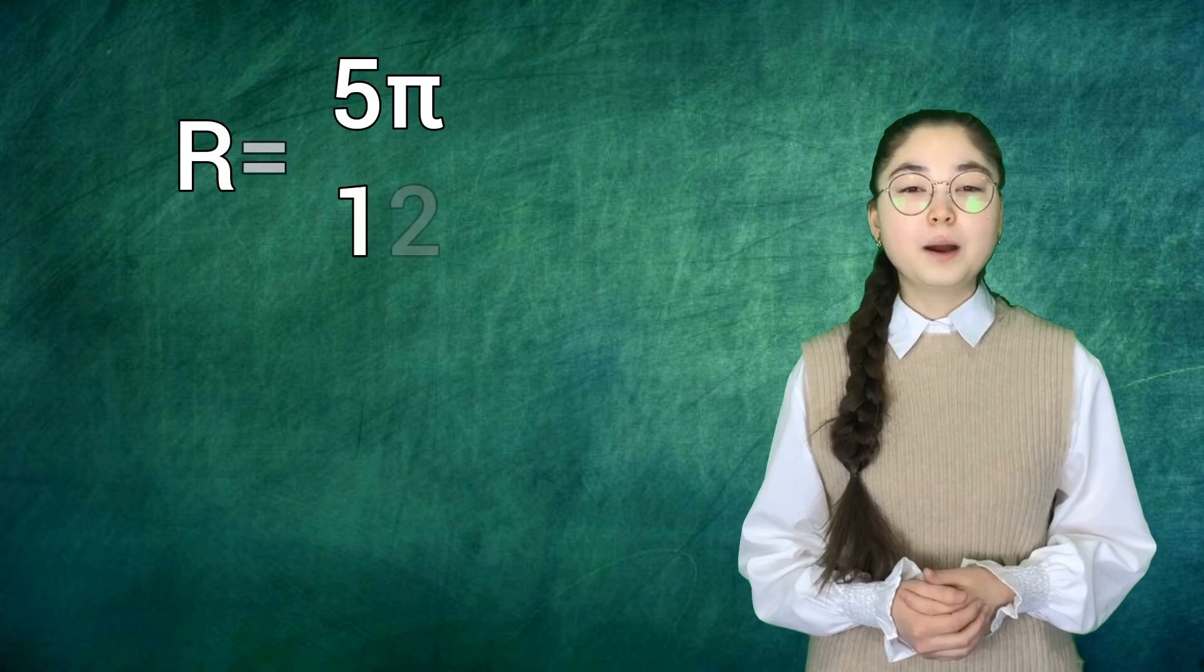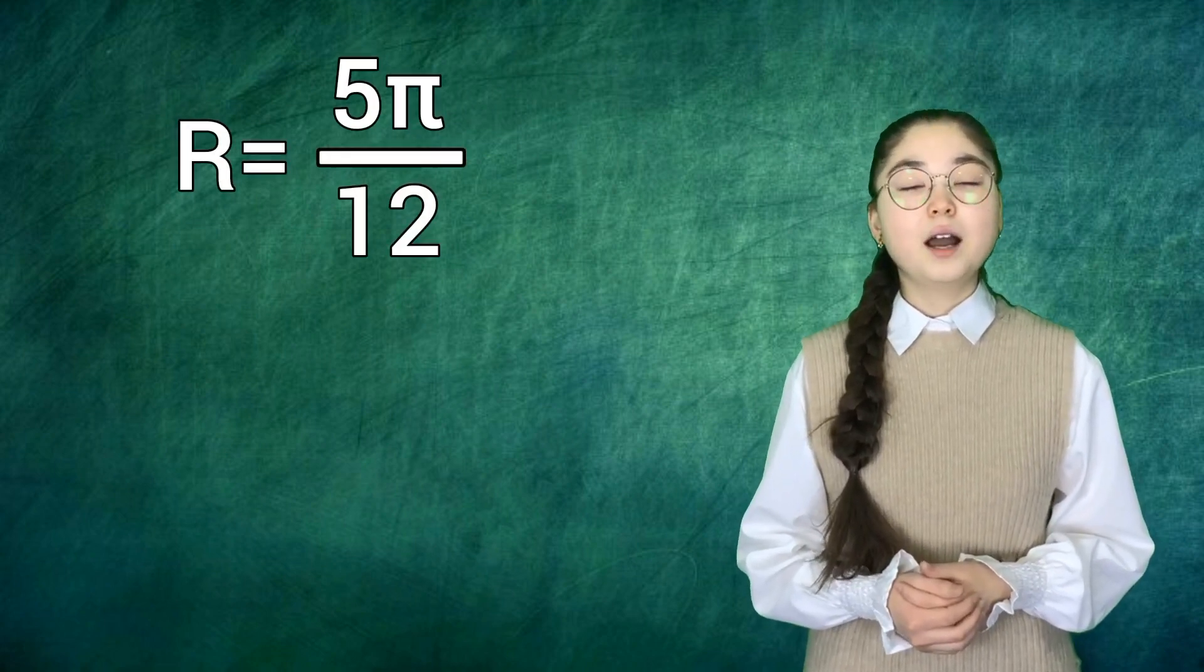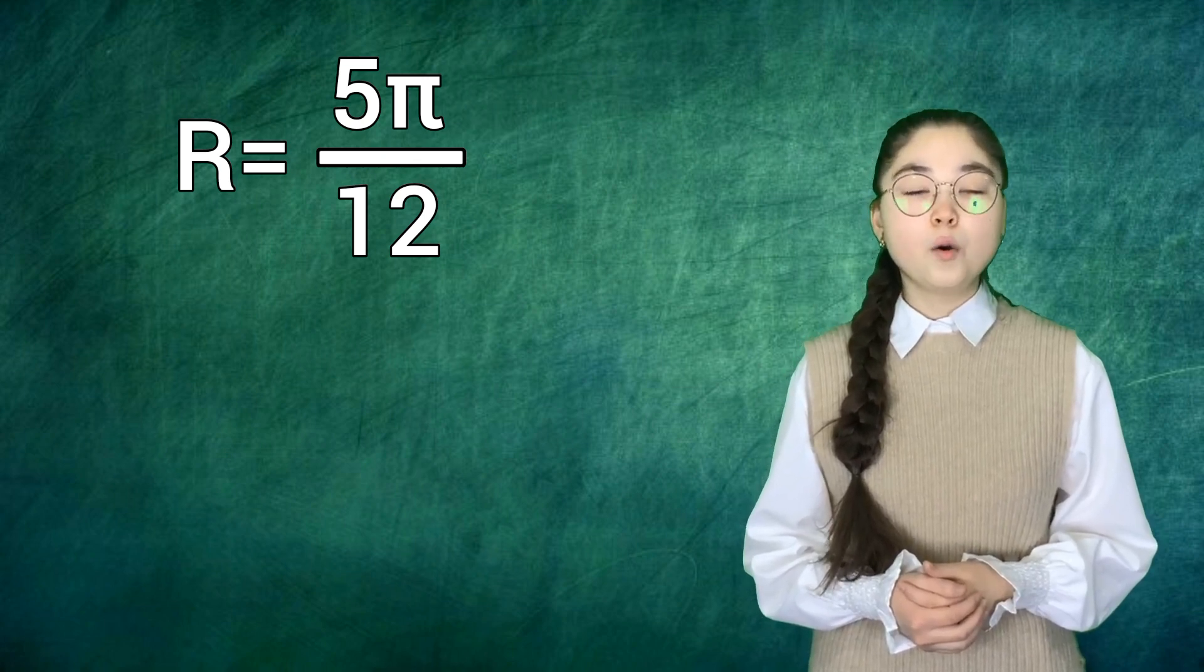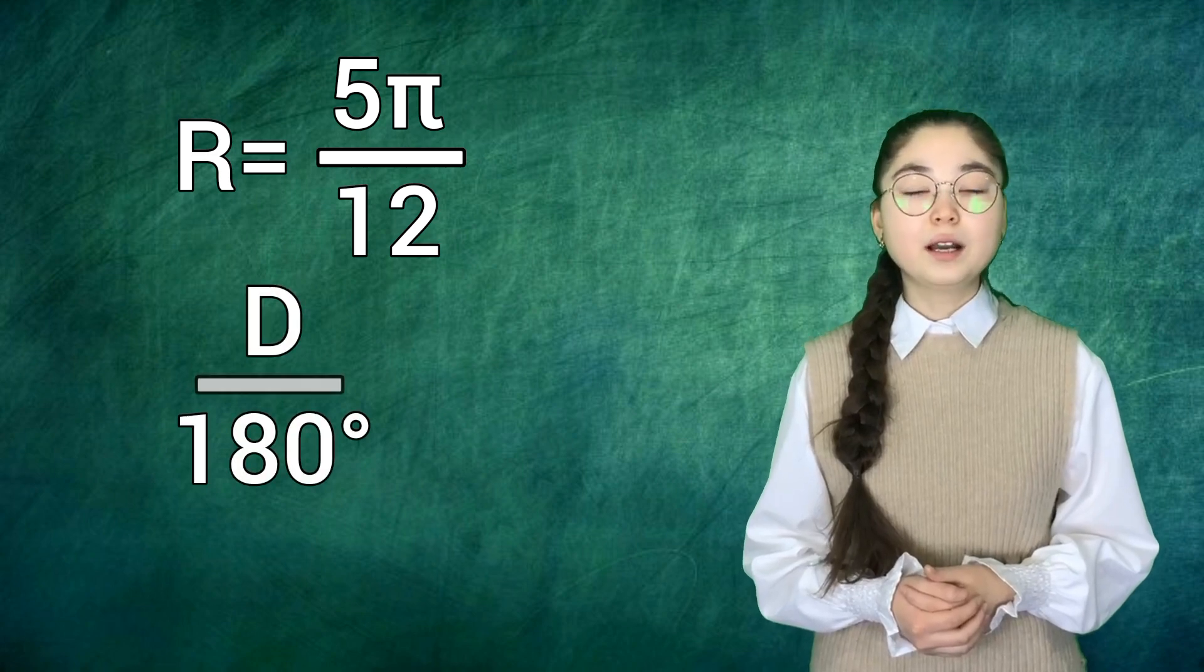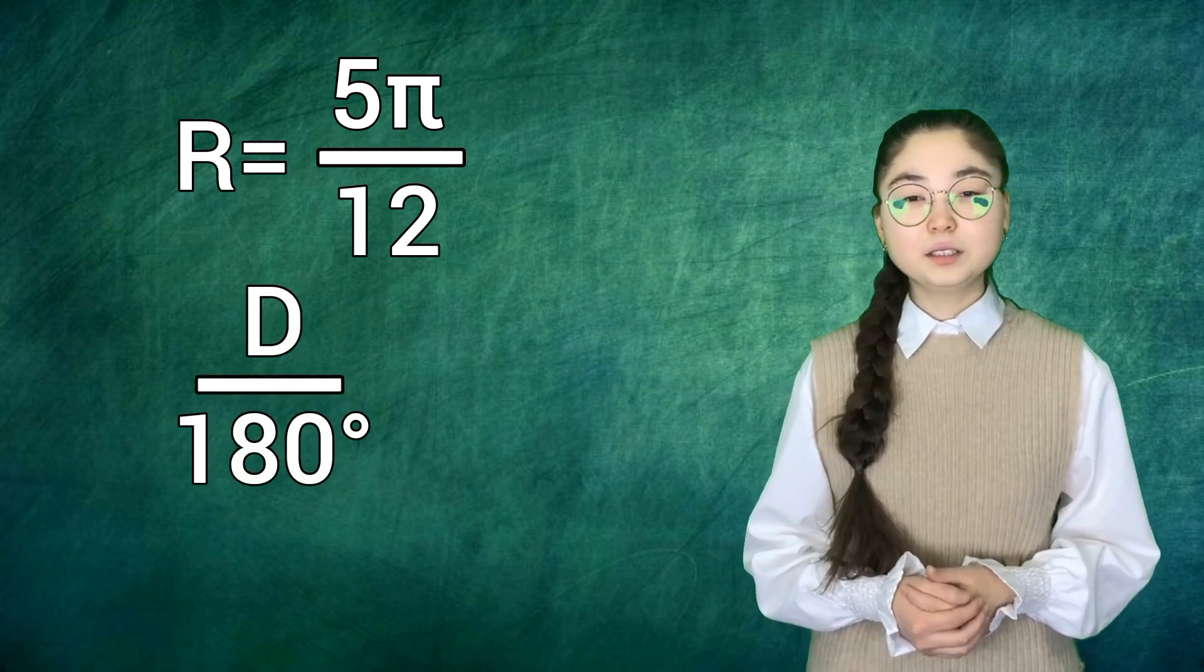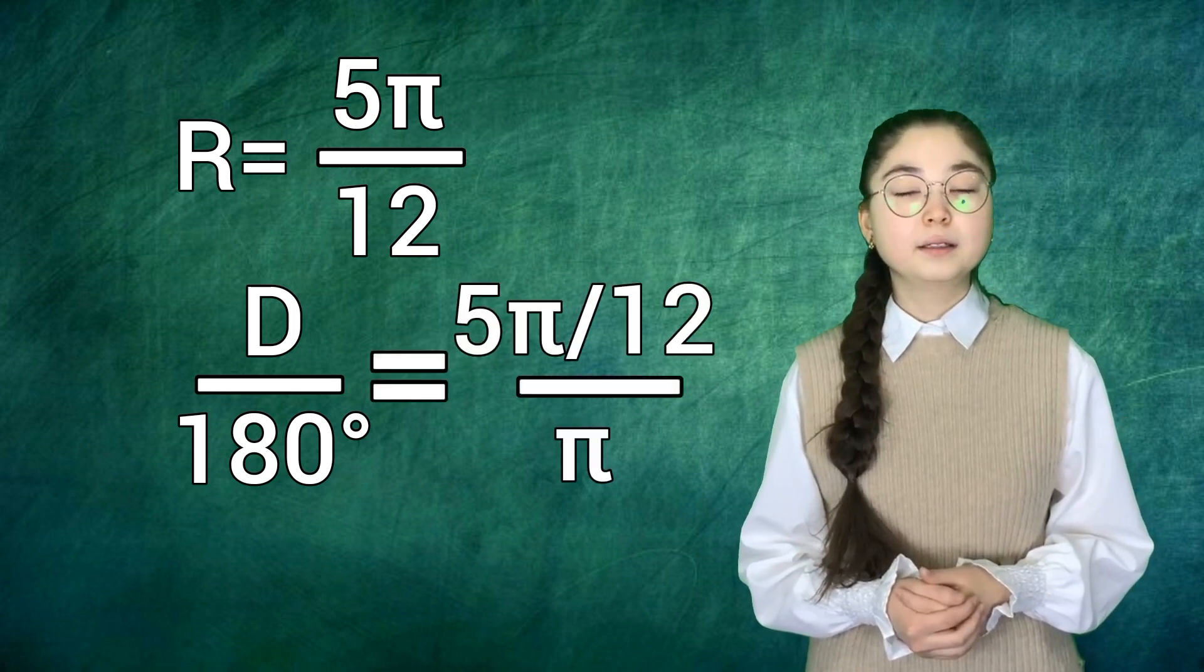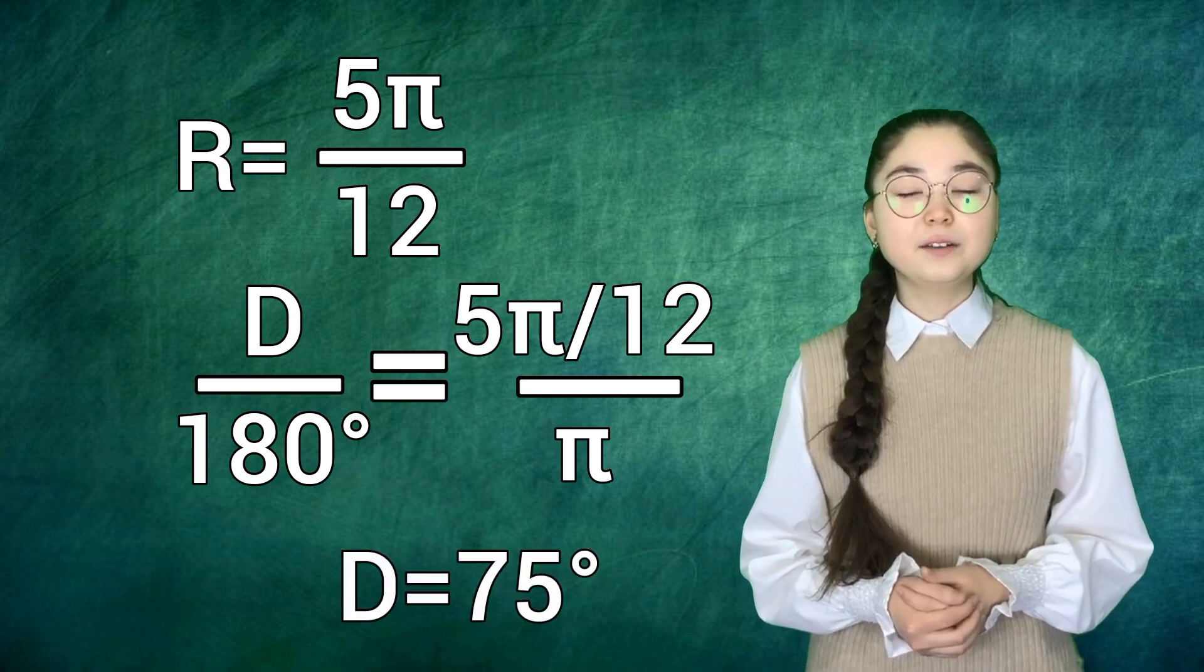Next example. Convert 5π over 12 to degrees. For r equals 5π over 12, we have d over 180 degrees equals 5π over 12 over π. So d equals 75 degrees.